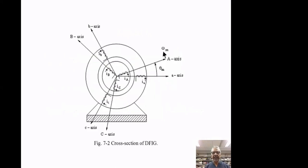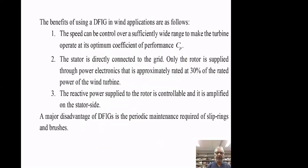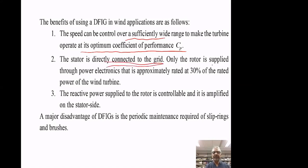Here's a schematic of six windings. In this case, three rotor windings are actual windings, unlike in squirrel cage machines where they were representing the squirrel cage. Uppercase letters represent the rotor windings and lowercase 'a' represents the stator winding. The advantages of DFIG include: speed control over a wide range for wind applications to operate the turbine at maximum coefficient of performance; the stator is directly connected to the grid; and only the rotor is supplied by power electronics, which is approximately one third of the rated power of the wind turbine.